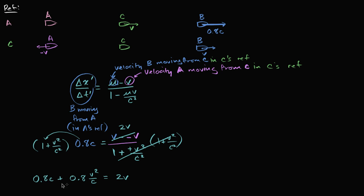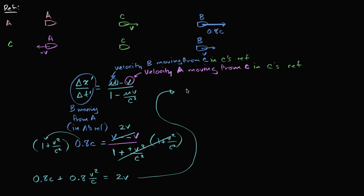We want to solve for v, so we're setting up essentially a quadratic in v. Let's subtract 2v from both sides and write it in order of degrees. On the left-hand side, we have 0.8 over c times v squared, then minus 2v, plus 0.8c, equals 0.